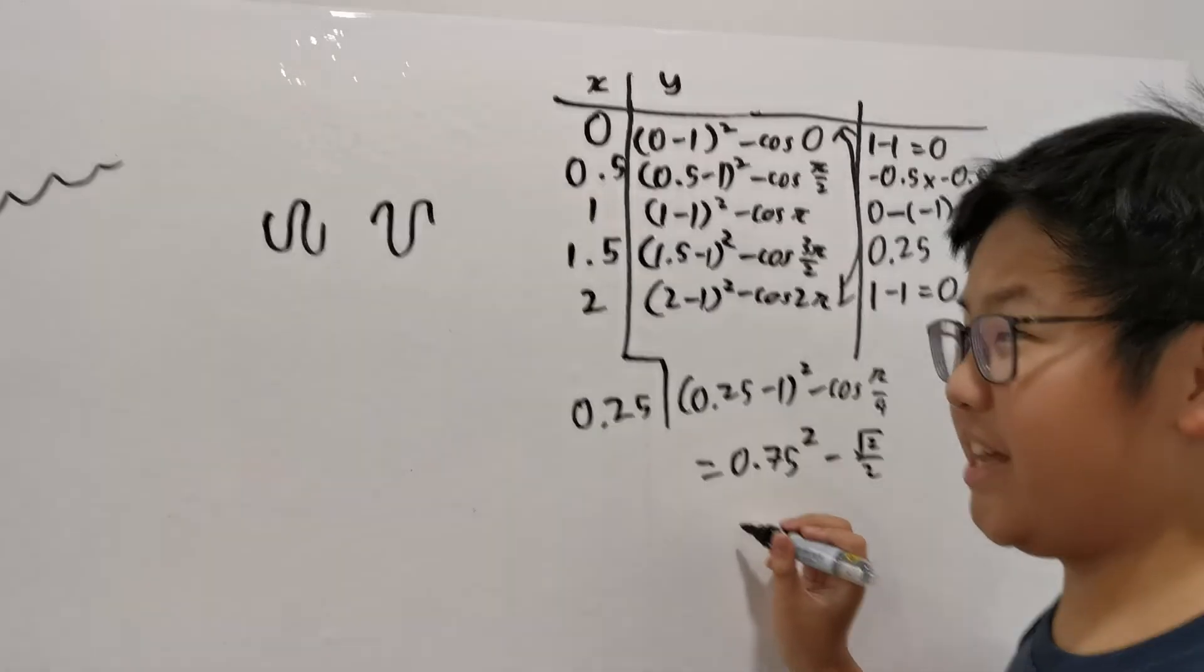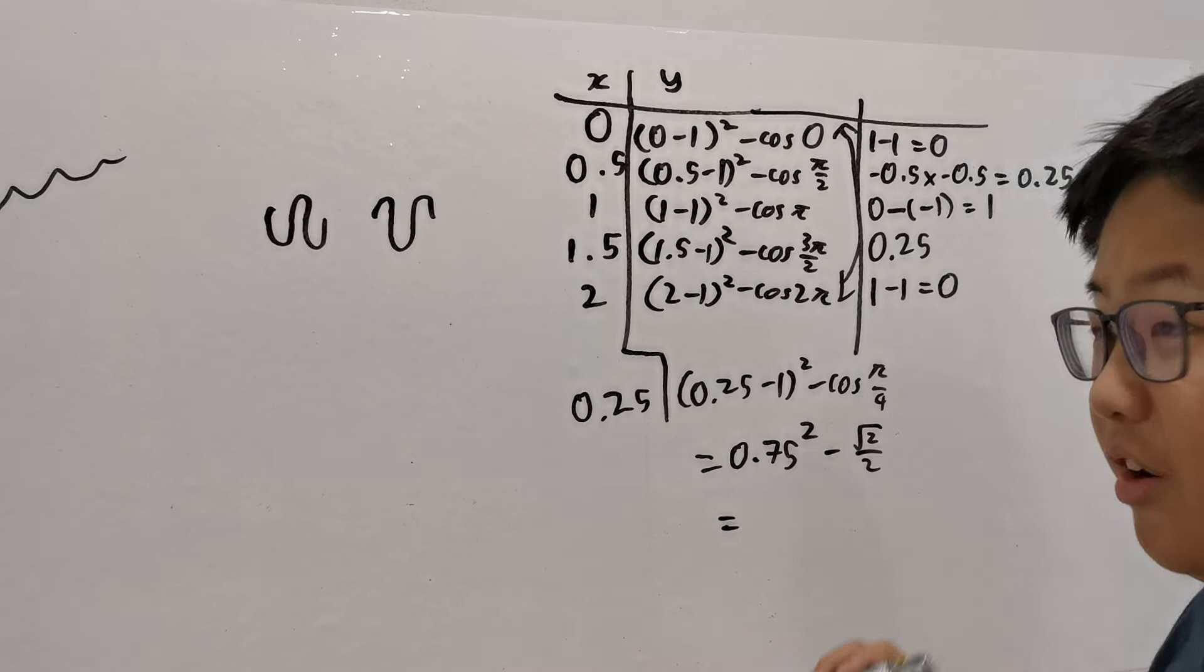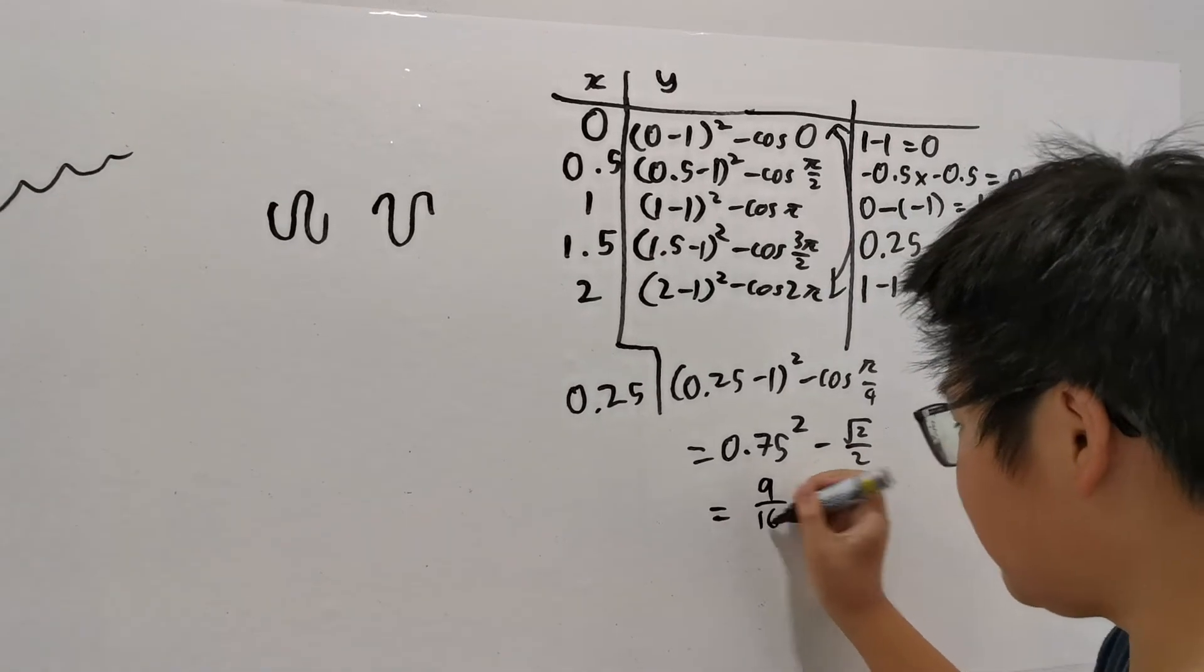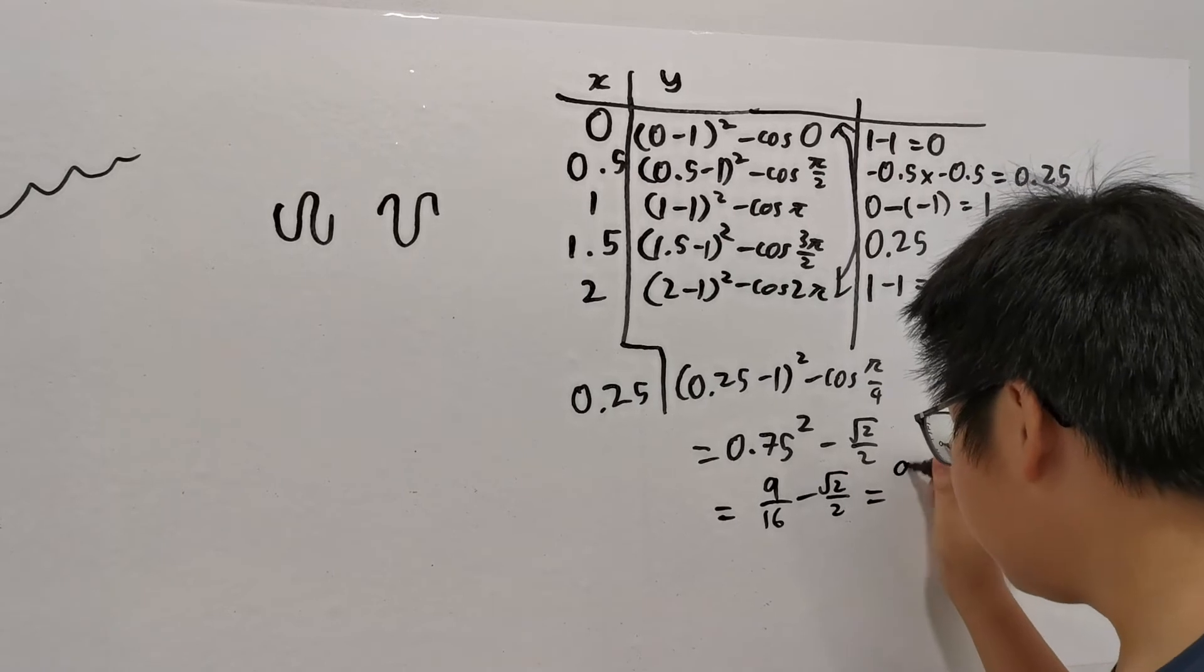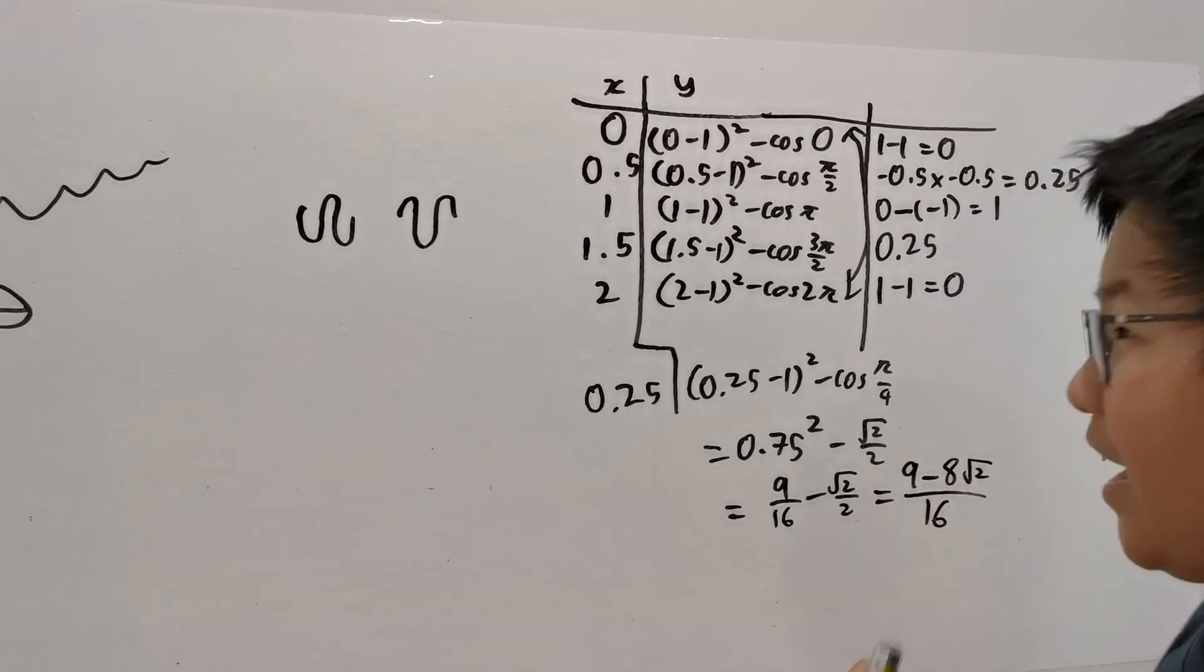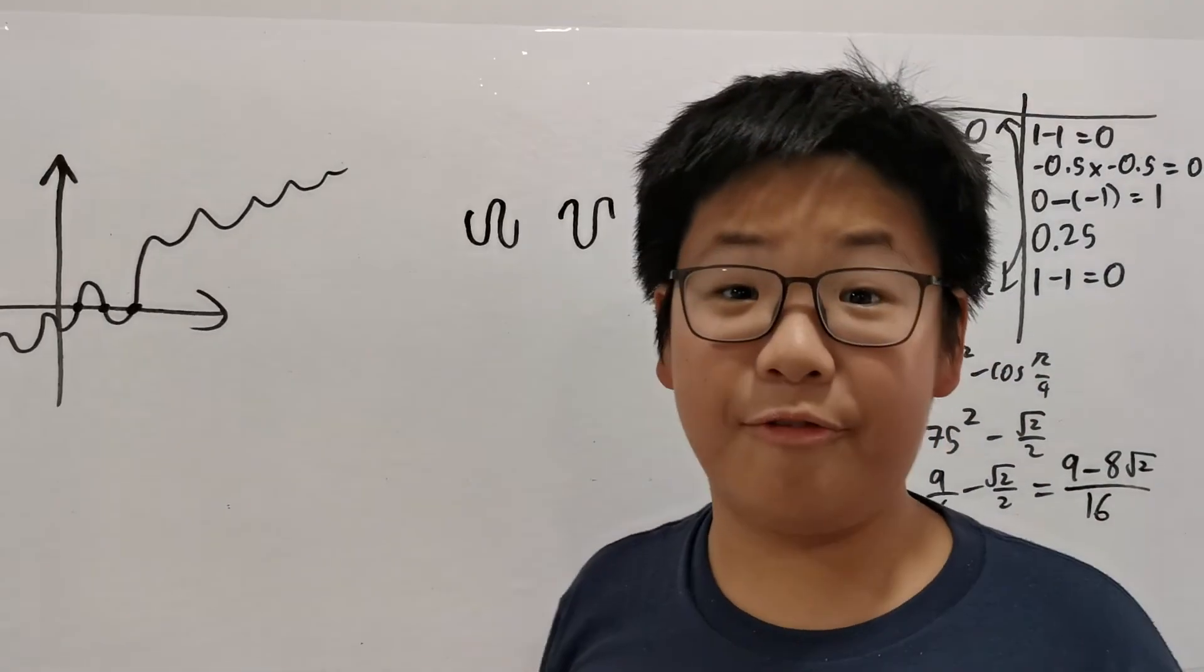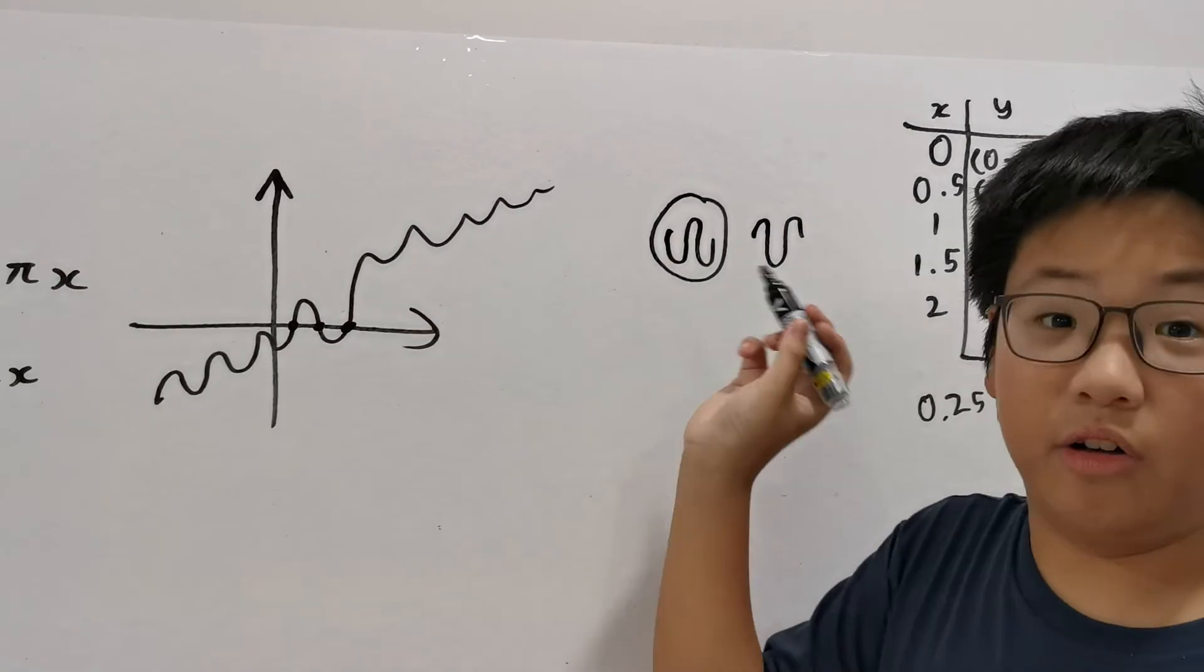As you can imagine, it is negative. We'll just calculate the exact value for you. 9 over 16 minus root 2 over 2 equals to 9 minus 8 root 2 over 16. It's negative! So we have found out that the area in the 3 minima is of this shape.